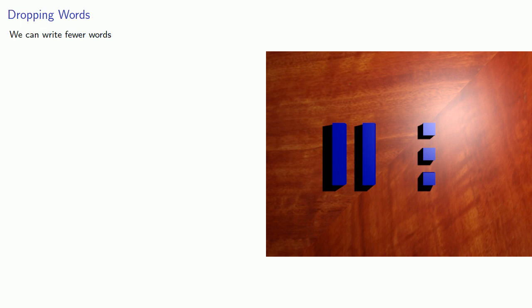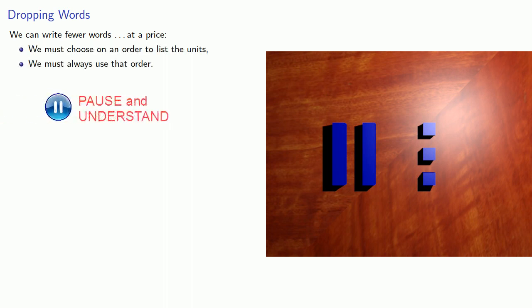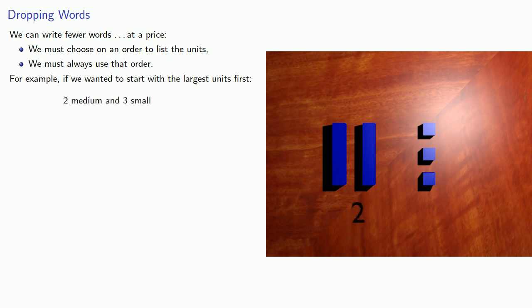In fact, we can write fewer words at a price. And that price says we have to be a little bit organized. We must choose an order to list the units, and we must always use that order. For example, if we wanted to start with the largest units first, we have 2 medium and 3 small. We can just record 2 and 3.